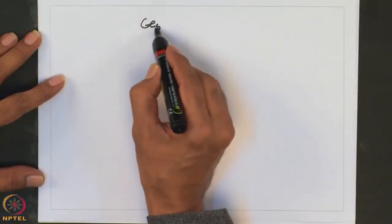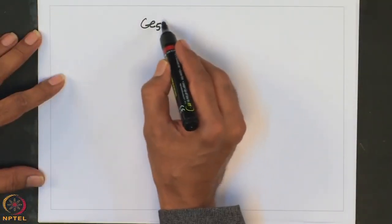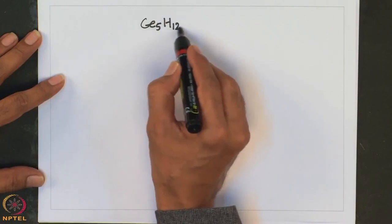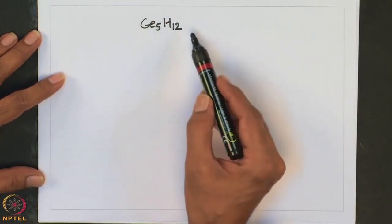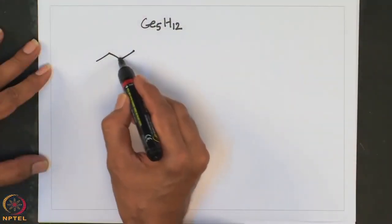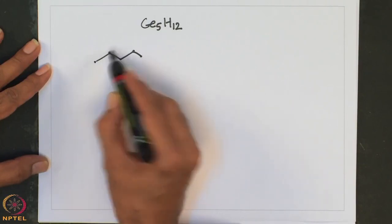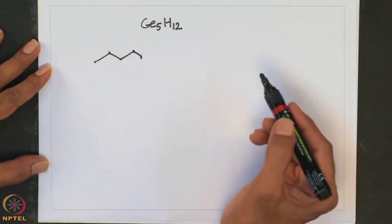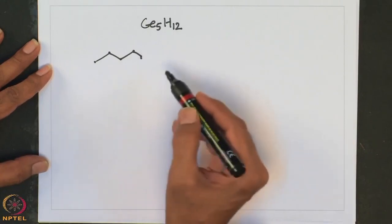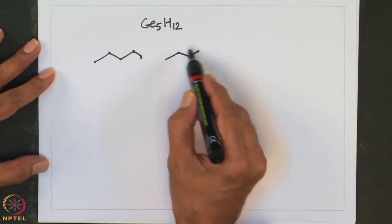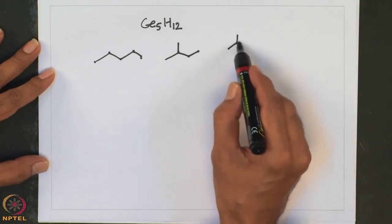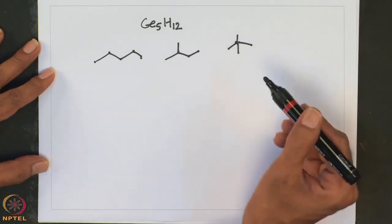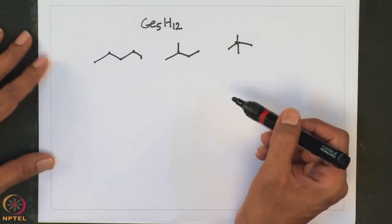Consider the germanium 5 analog, germapentane. How many isomers of germapentane are possible? It is very similar to organic pentane. One can write three isomers: the straight chain Ge5H12, a branched isomer with a branch at the second position, and another branched isomer. So essentially 3 isomers are possible, similar to the 3 isomers of pentane.